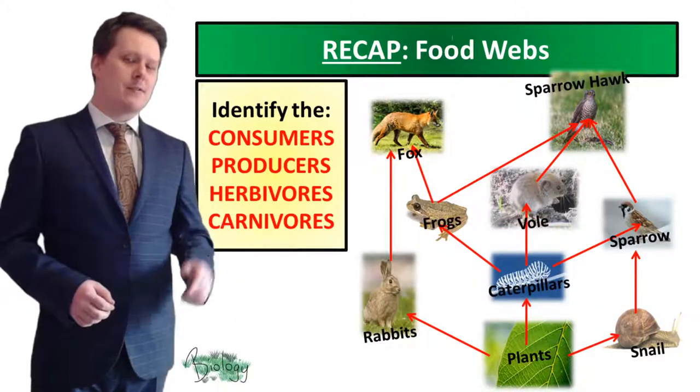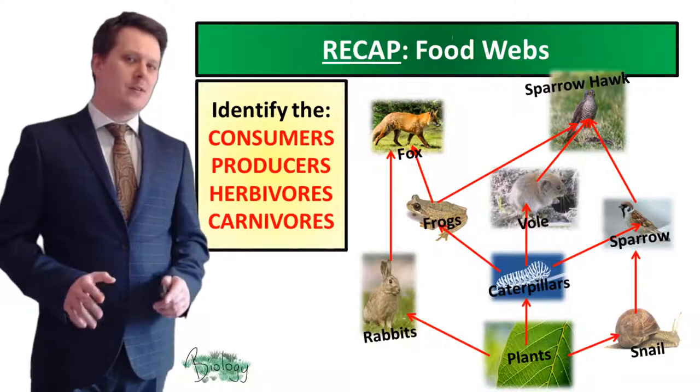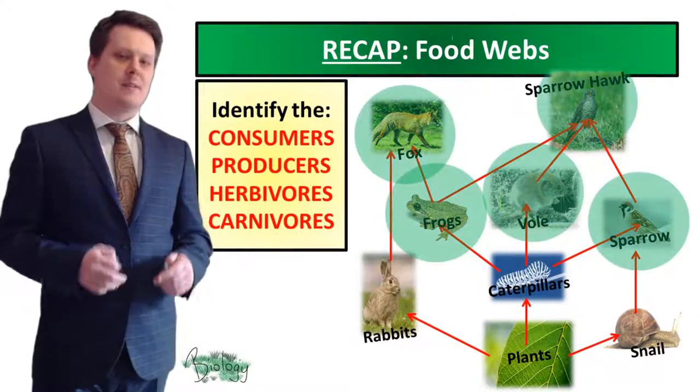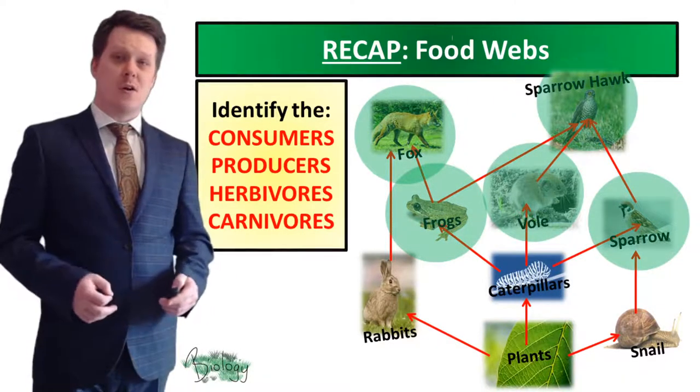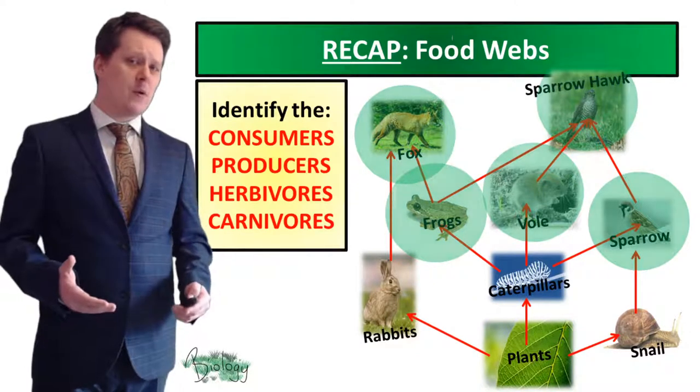Our carnivores — our meat eaters — are animals that only eat other consumers. In this case it's going to be the fox, the frog, the vole, the sparrow and the sparrowhawk.